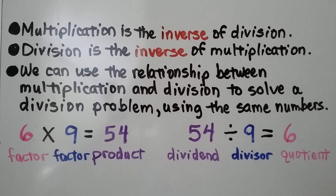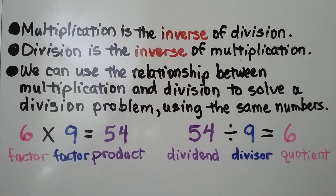We can use the relationship between multiplication and division to solve division problems using the same numbers. We have the factor 6 times the factor 9. It equals the product 54. If 54 is the dividend and 9 is the divisor, 6 will be the quotient. We're using the same numbers.